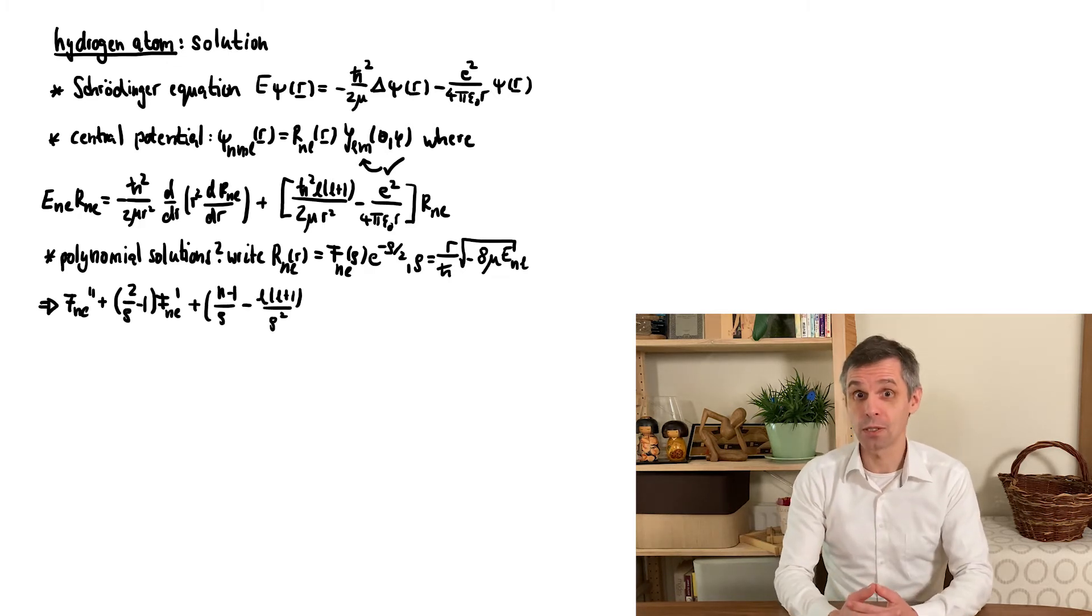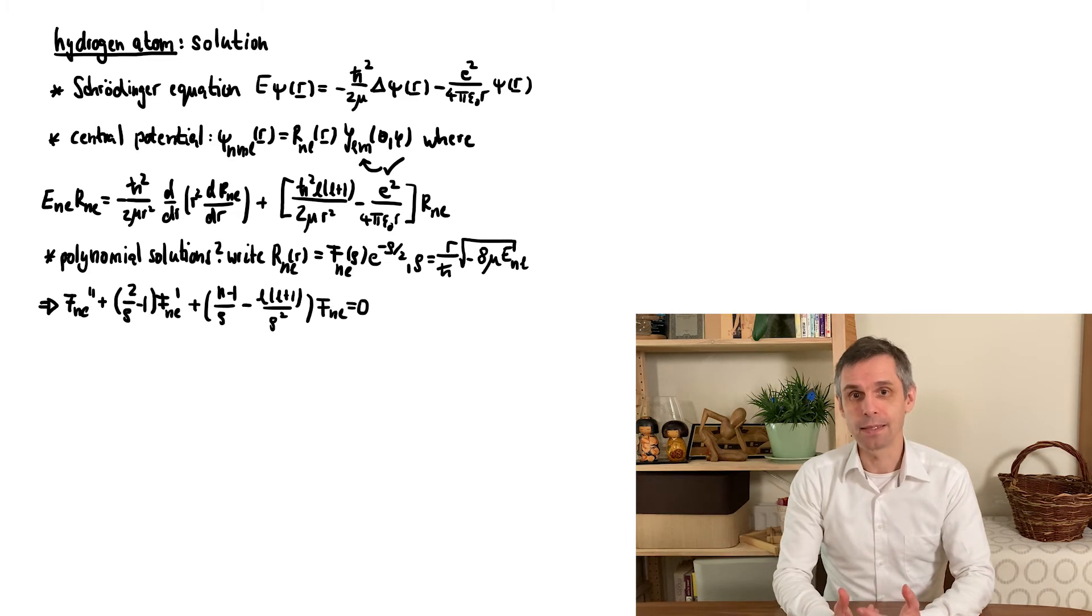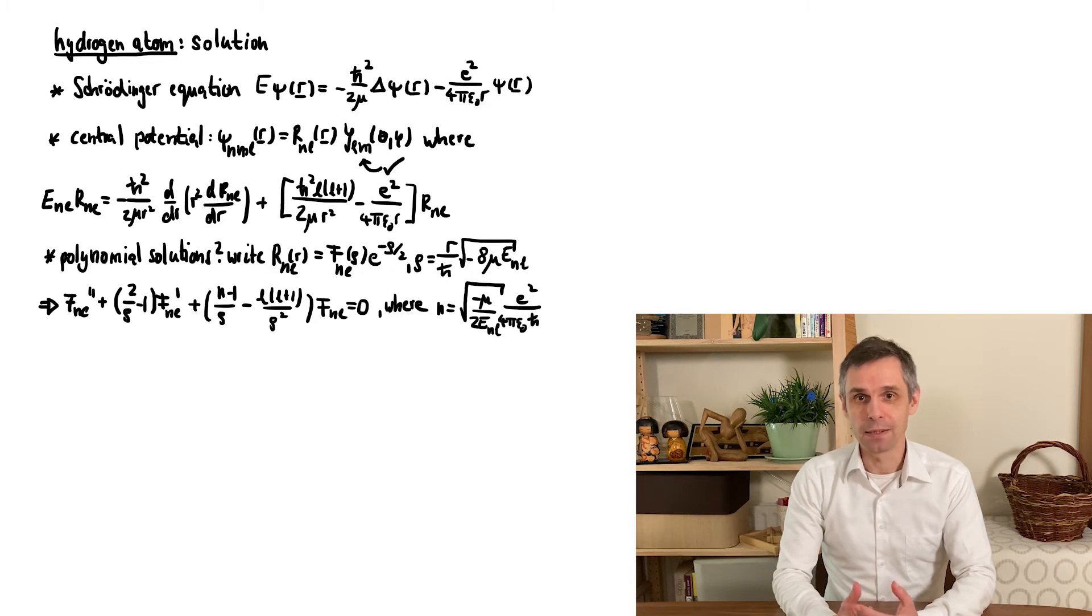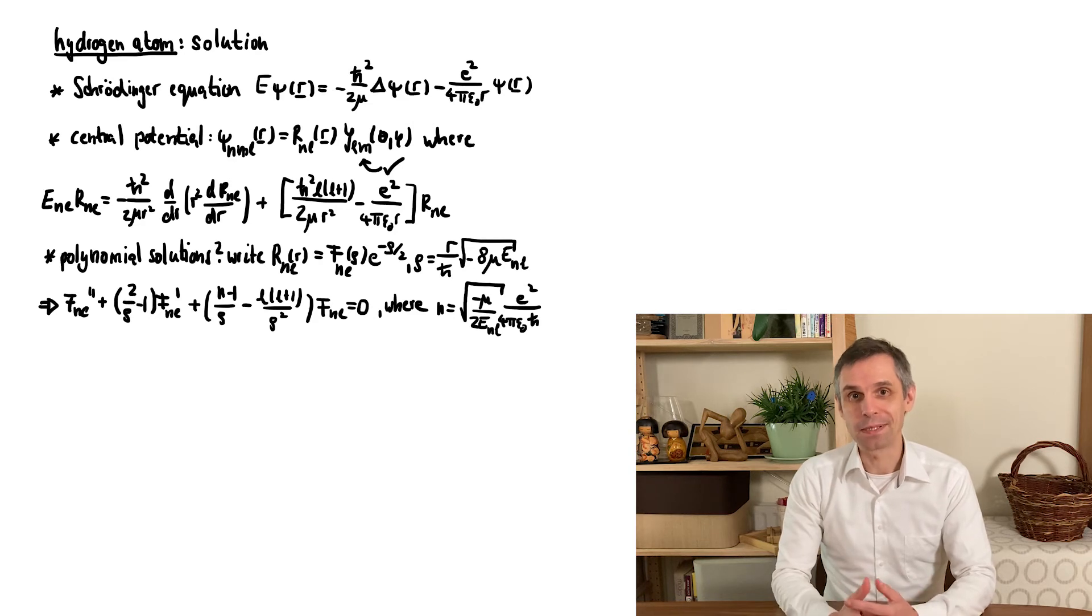This is known as Laguerre's differential equation, again an equation that has been written down a long time ago. In it, we combined a whole lot of constants into the symbol n, so the solutions really only depend on n and l, and we can use these as indices to label the solutions. That's now very transparent.